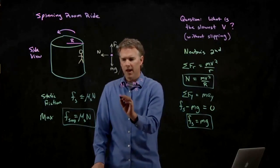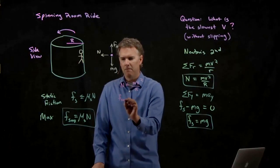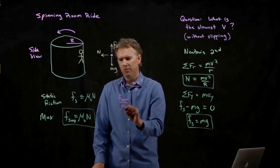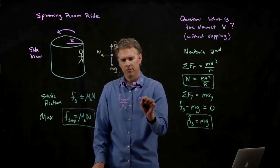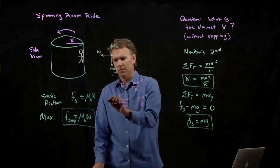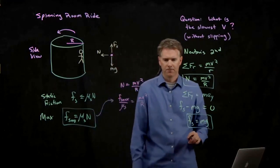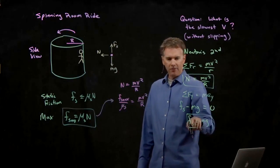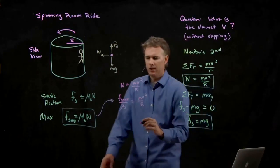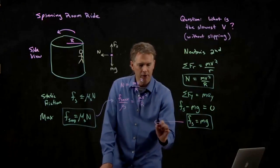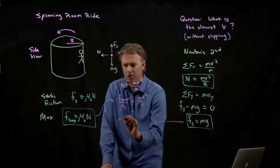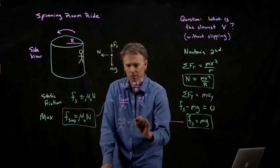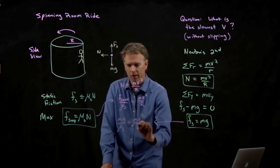So this is F S max divided by mu sub S. And we just took that and plugged it in right there. And we know what F S is. F S is just M G. And so when I take this over here, we get M G over mu S equals M V squared over R.